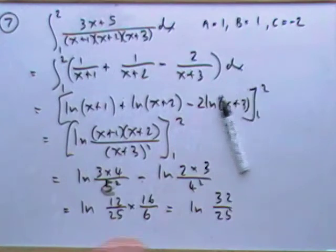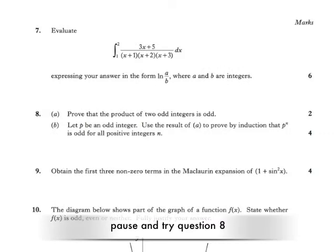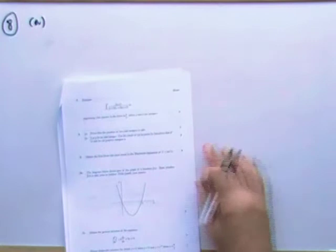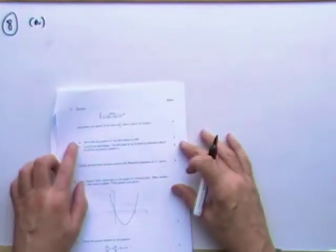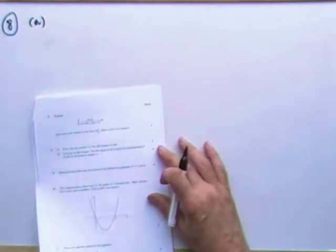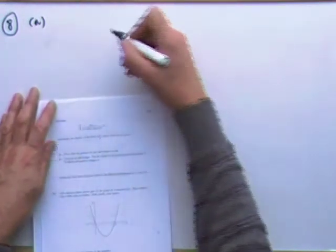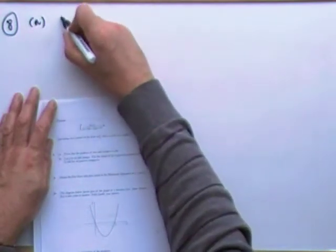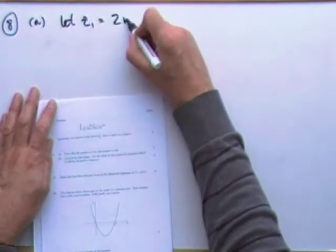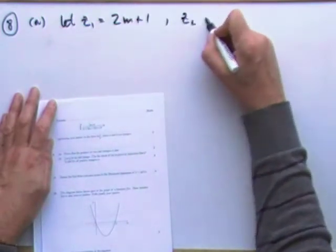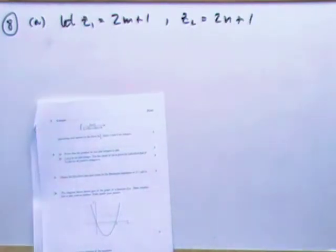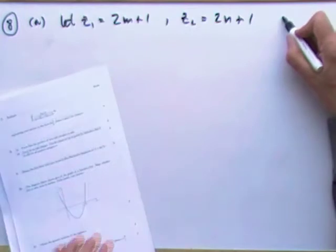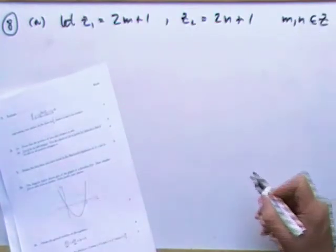Number eight: proofs, six marks, easier than you think. First one: prove the product of two odd integers is odd. First, demonstrate you're actually using odd integers. Let z₁ = 2m + 1 and z₂ = 2n + 1, so there are definitely two odd integers where m and n are integers.